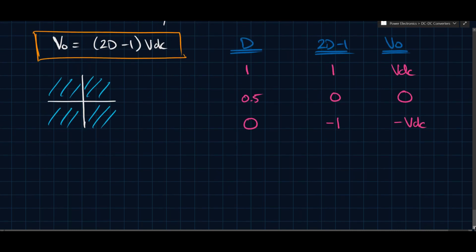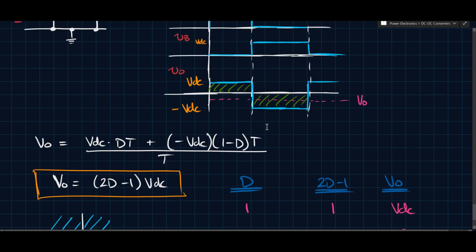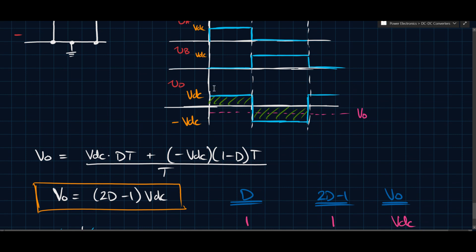So if you say D equals 0.1, or 0.25 even, let's say, then 2 times 0.25 is 0.5 minus 1 is minus 0.5. And so this ends up being minus VDC over 2. So whenever D is less than 0.5, you end up with a negative output voltage, average output voltage. And so that's exactly what we're seeing here.